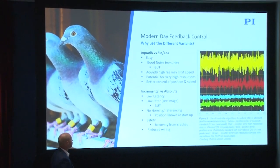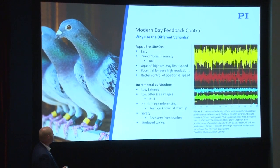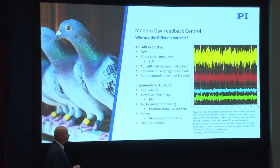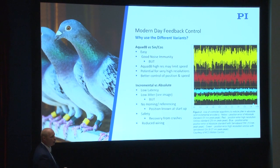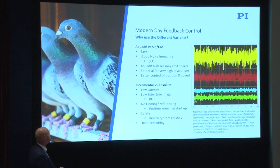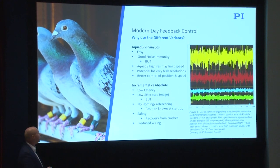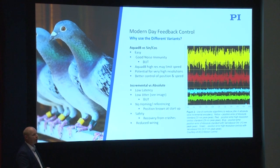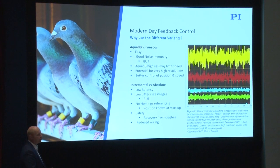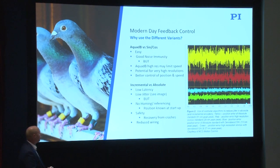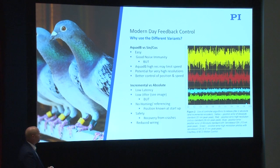So you've got the choice of A quad B versus sine cosine. Why would you use a sine cosine encoder? A quad B encoders have been around forever — they're easy and have really good noise immunity. But one of the things attractive about sine cosine is the potential for very high resolutions. With more information coming into the system, it's possible to get better control of position and speed, giving higher performance for precision motion systems.